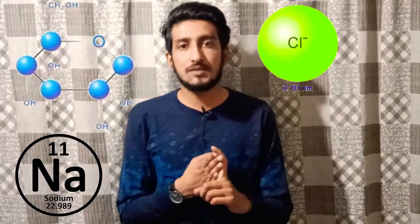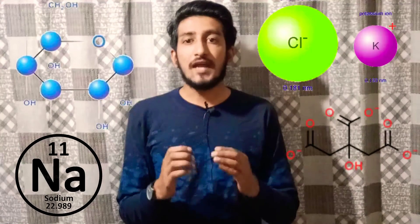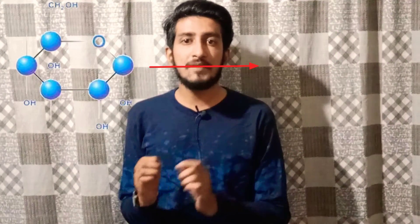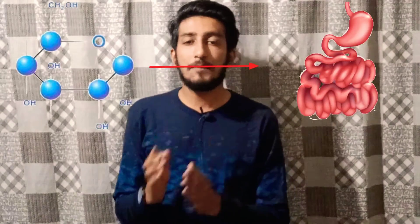In children, ORS is preferred most of the time. The mechanism of action of ORS: one sachet of ORS is mixed with one liter of water and used for 24 hours; after 24 hours, the remaining amount is discarded. It is given four to six times a day. ORS contains glucose, sodium ions, chloride ions, potassium ions, and citrate.